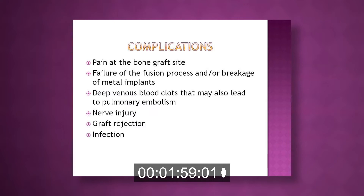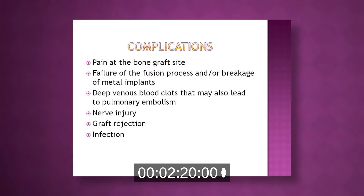Complications with spinal surgery include pain at the bone graft site, failure of the fusion process or breakage of metal implants, which can be caused by severe trauma, deep venous blood clots that may also lead to pulmonary embolism, nerve injury, graft rejection, or infection.